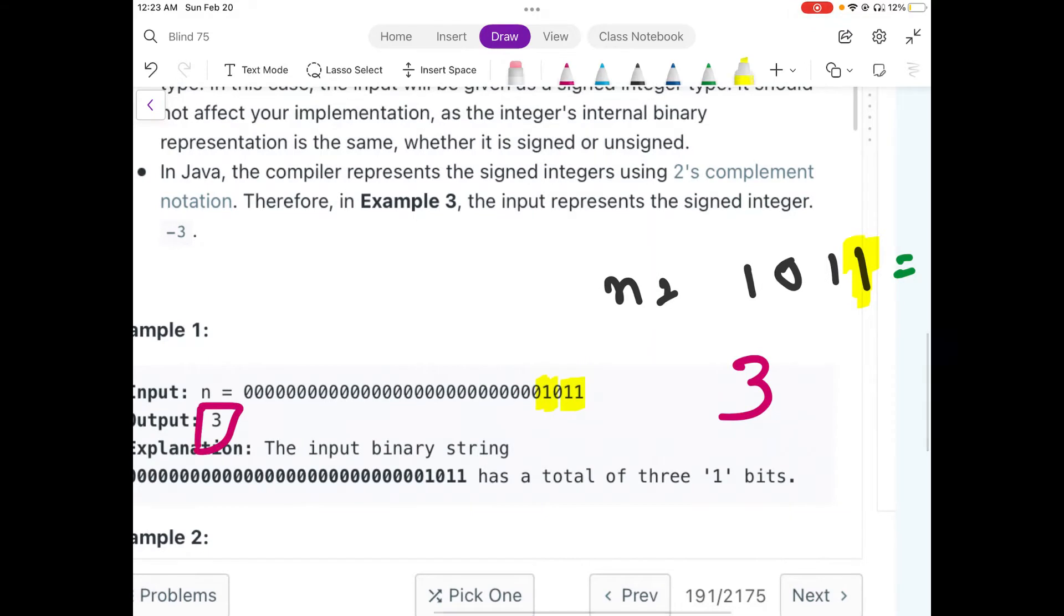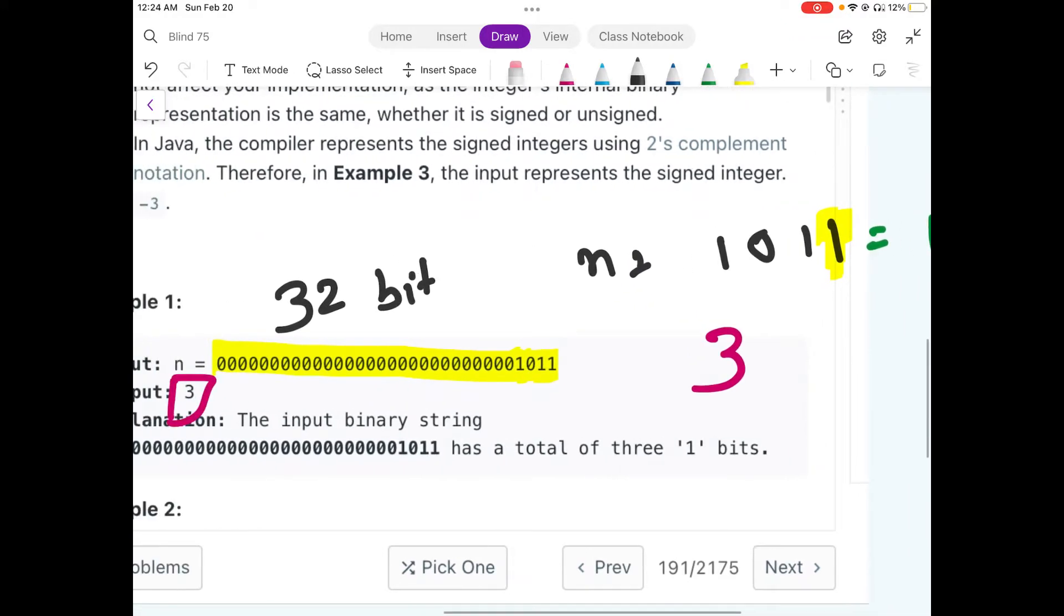And notice that the number is represented quite long because it is showing all the 32 bits of any integer. All the input types would be of 32 bit. And we need to find that how many times 1 exists.